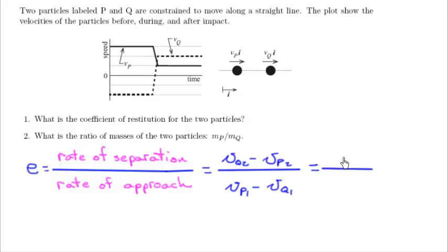2 minus 1 is 1. And vp1 minus vq1. So the difference here looks to be 5. So there's my rate of approach. This gap right here is my rate of separation. So this becomes 0.2. And there's my e. Done.